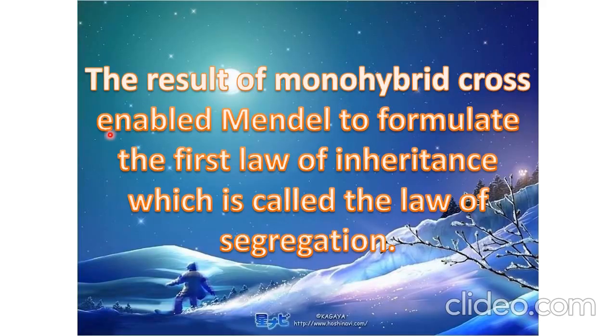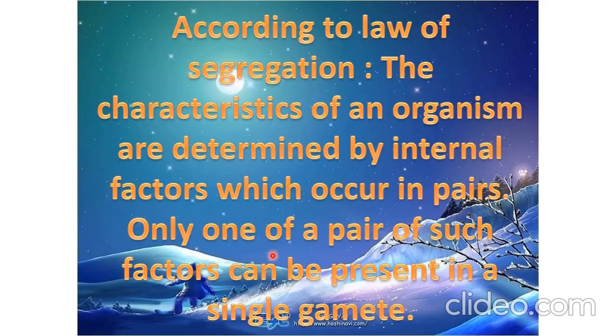The result of monohybrid cross enabled Mendel to formulate the first law of inheritance, which is called the Law of Segregation. According to the law of segregation, the characteristics of an organism are determined by internal factors which occur in a pair. Only one of a pair of such factors can be present in a single gamete.